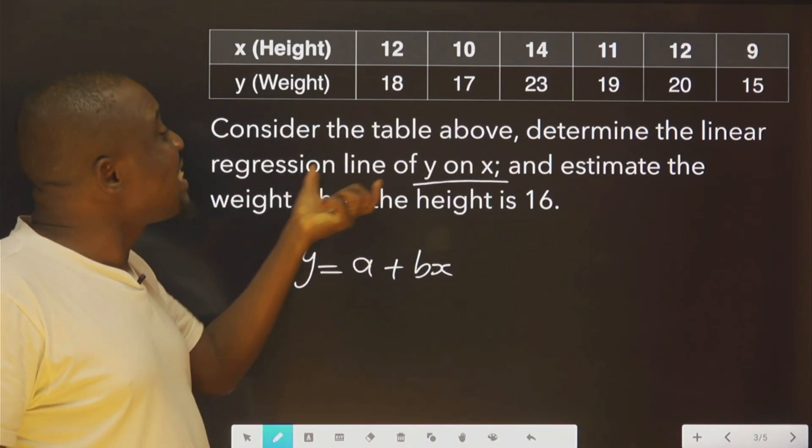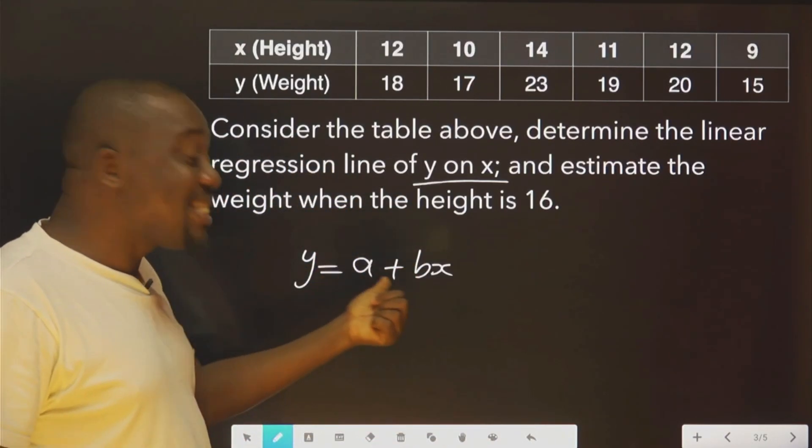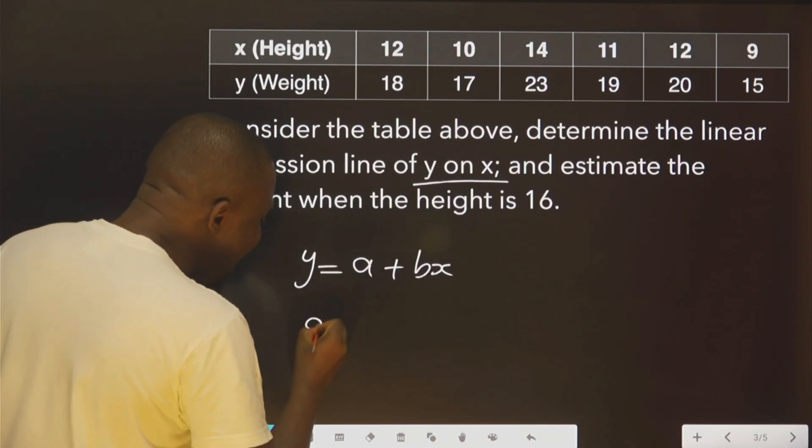But this question says, what is the linear regression line of y on x? This is it. All you need to do now is to find a and b.